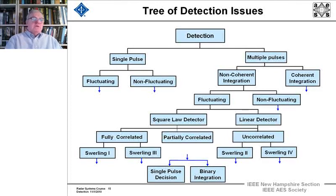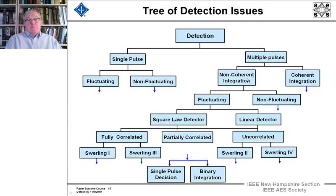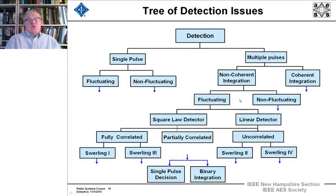We can detect using both phase and amplitude coherently, or non-coherently where we take the magnitude of the return from each pulse and add it up. We can be dealing with targets that fluctuate or do not fluctuate.